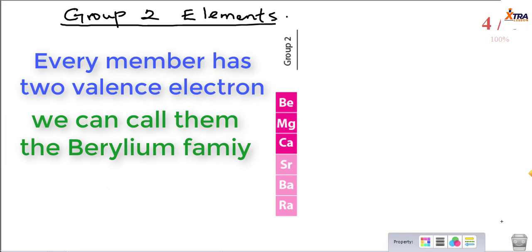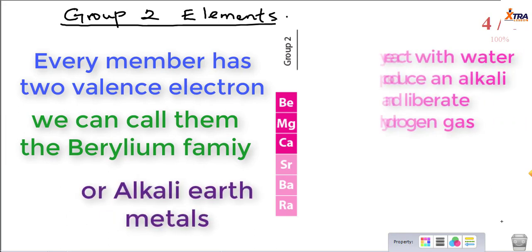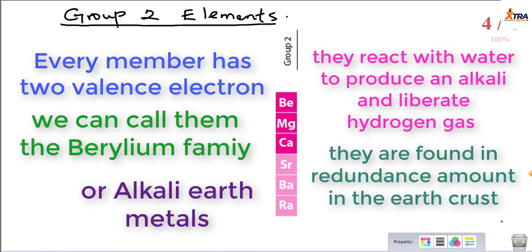We can otherwise call them the alkaline earth metals, because just like group 1, they react with water to produce an alkaline solution and liberate hydrogen gas. The difference between alkaline earth metals and alkali metals is the word 'earth', which signifies that they are found in abundant amounts in the earth's crust. So group 2 elements have two valence electrons, are called the beryllium family, or the alkaline earth metals.